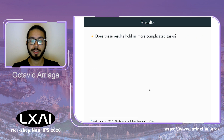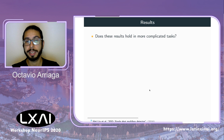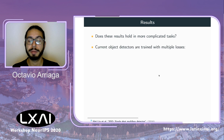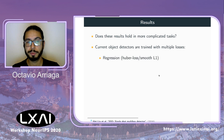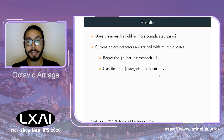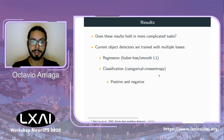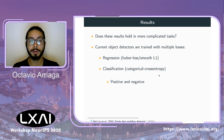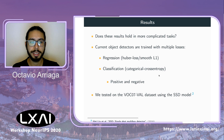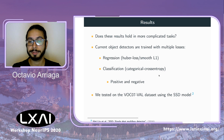Another question was whether our method holds on more complicated tasks. We tested it on object detectors trained with multiple losses: the bounding box regression loss using the Huber loss, and the categorical cross-entropy classification loss, which is divided into positive losses for boxes containing a class and negative losses for background boxes. Results are shown on the VOC 2007 validation dataset using the Single-Shot Multi-box Detector model.